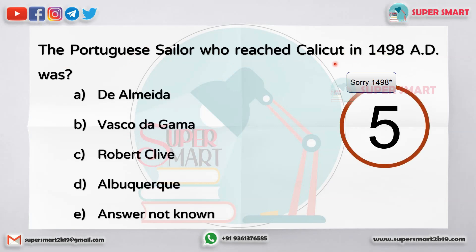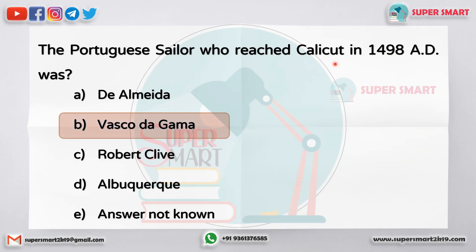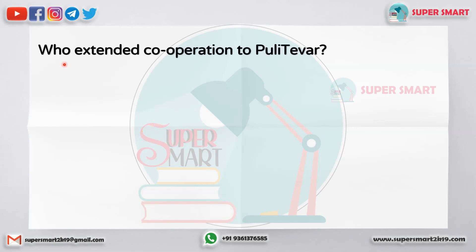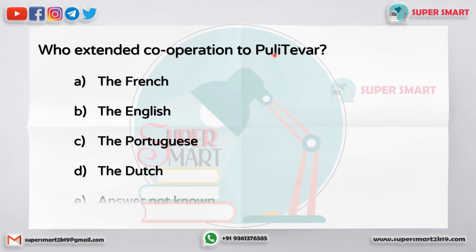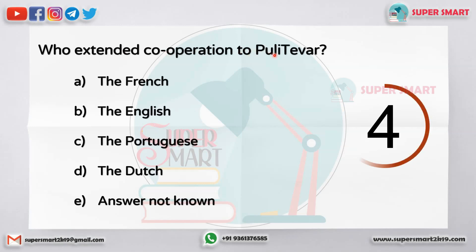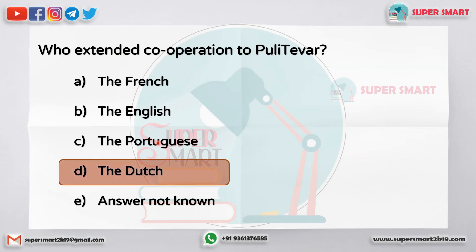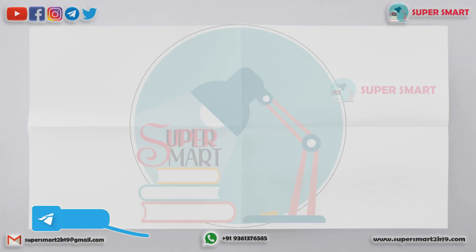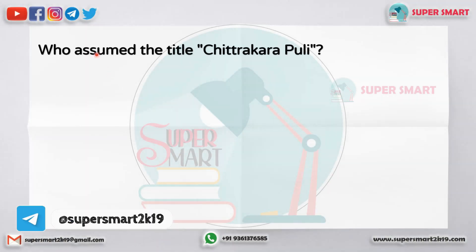Who patronized Kambar? The Portuguese sailor who reached Calicut in 1498 AD was dash. Who extended cooperation to Pulithewer? Who assumed the title Chitra Kharapuli?